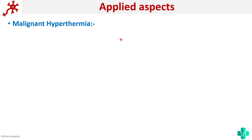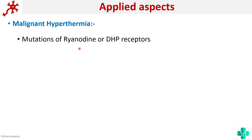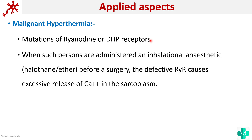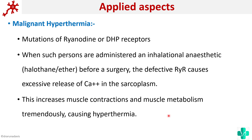An important applied aspect based on the sarco tubular system is malignant hyperthermia. If there is a mutation of the ryanodine receptor or dihydropyridine receptor, and such a person has surgery and is given an inhalation anesthetic, the defective ryanodine receptor causes excess release of calcium into the sarcoplasm. This leads to increased muscle contraction and metabolism, which causes hyperthermia — that is why it is called malignant hyperthermia.